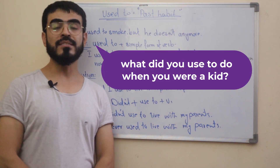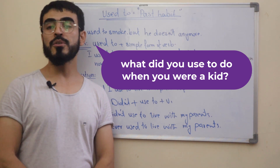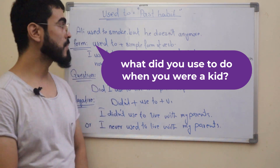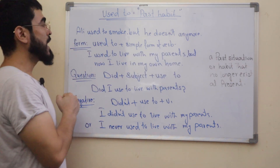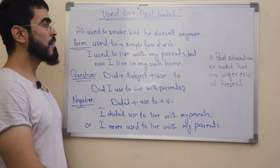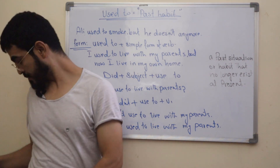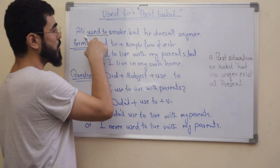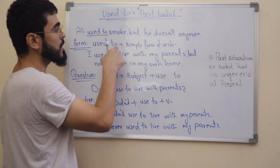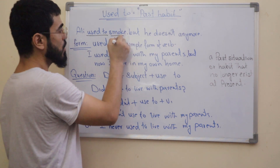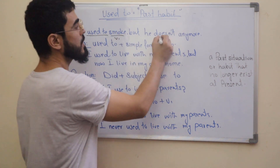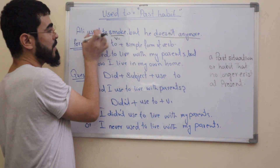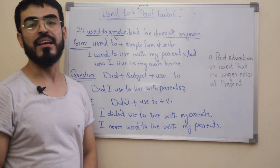For example, you can answer this question: What did you use to do when you were a kid or a child? Let's look at the example: 'Ali used to smoke, but he doesn't anymore.' In this example, we have 'used to' as an expression followed by verb 1, the simple form of the verb. 'Doesn't anymore' means that he had this habit in the past but now he doesn't have that habit.